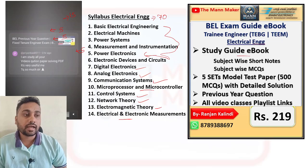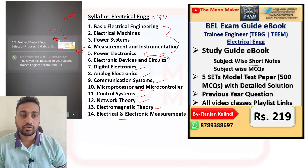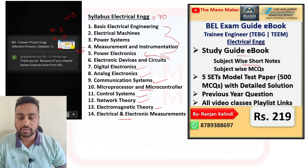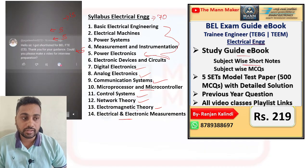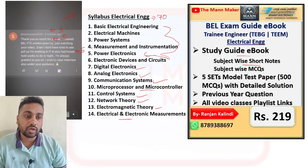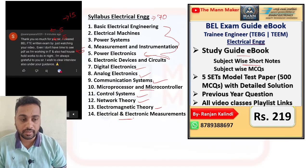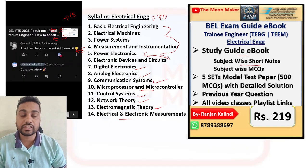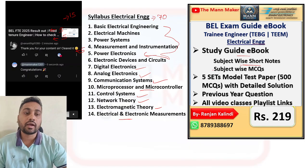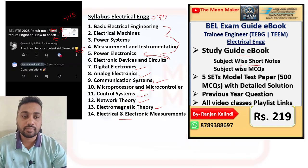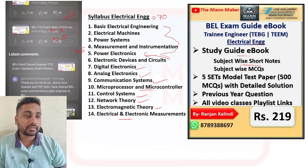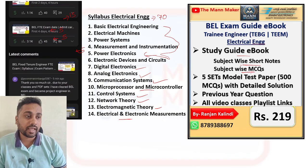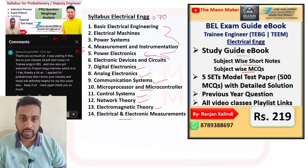In the ebook you will get subject-wise short notes. Whatever these 14 subjects are there — only technical — for all 14 subjects you are going to get short key notes covering exactly what is required for your exam, whatever they will ask. That much I have written in the short notes.